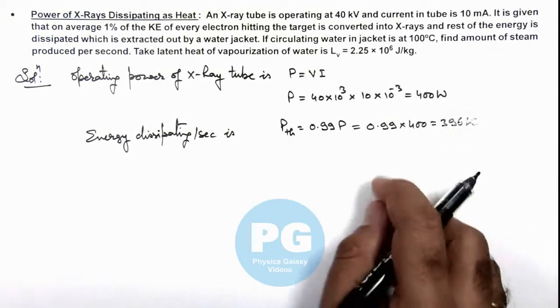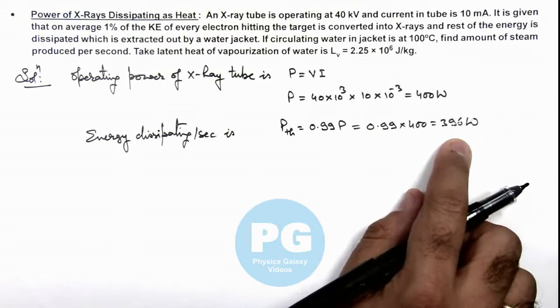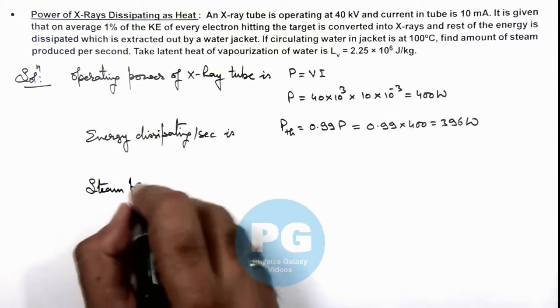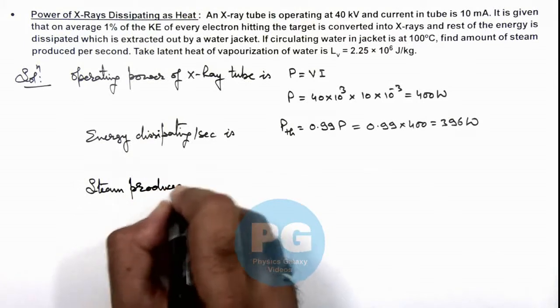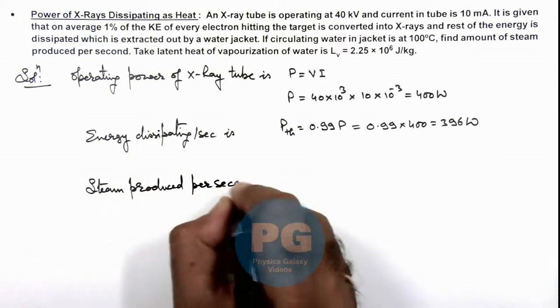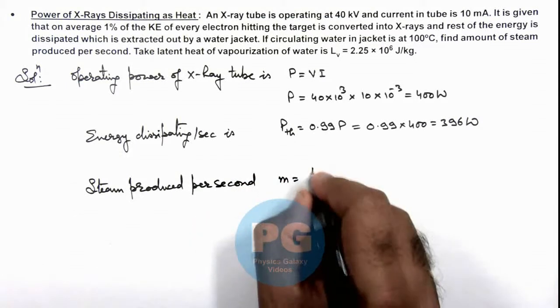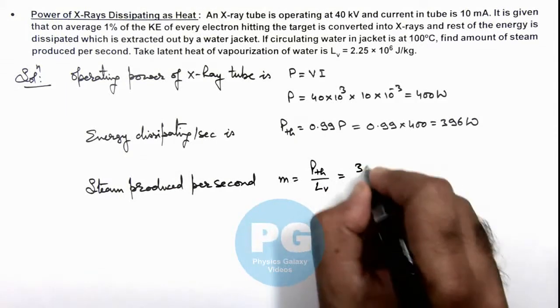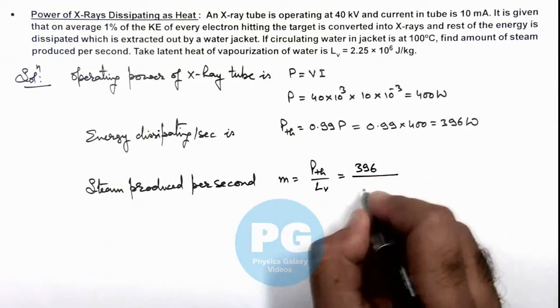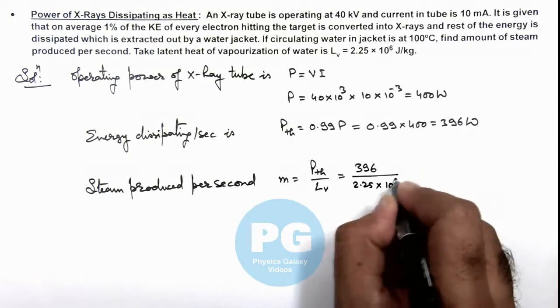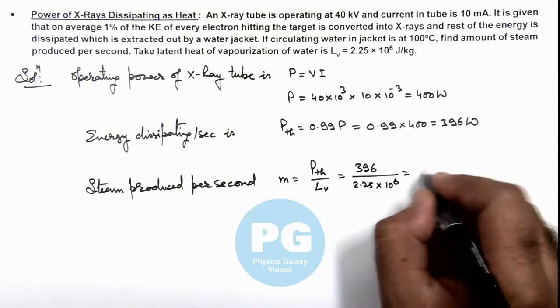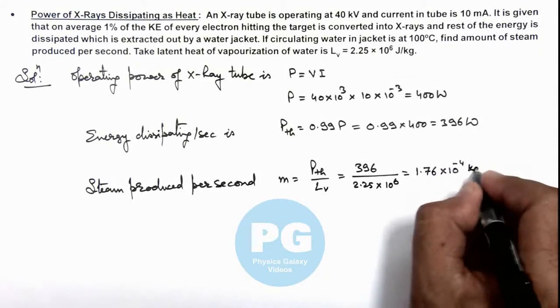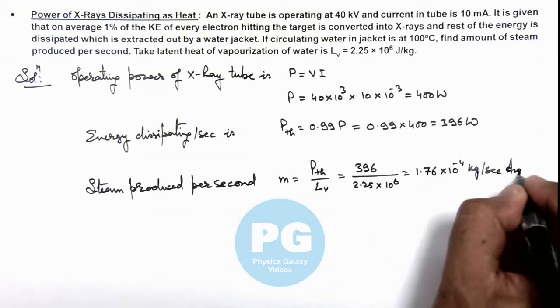So per unit time, this much amount of energy is dissipated as heat. So we can directly calculate the steam produced per second. Mass we can write as thermal power produced divided by the latent heat of vaporization, which is 396 divided by 2.55 into 10 to power 6, which is numerically coming out to be 1.76 into 10 to power minus 4 kilograms per second. That is the result of this problem.